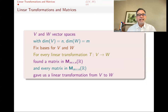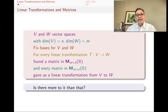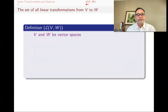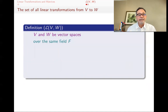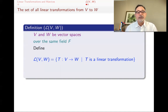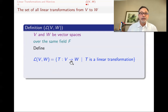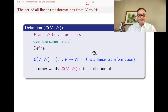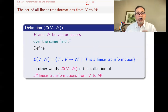The question is: is there any more to this than saying you can go back and forth between linear transformations and matrices? For that, we make the following definition. Let V and W be vector spaces over the same field F — F doesn't have to be the real numbers. We define Script L of V comma W to be the collection of all linear transformations from V to W. The elements of this set are linear transformations whose domain is V and whose co-domain is W. For this definition, you don't even need the spaces to be finite dimensional.